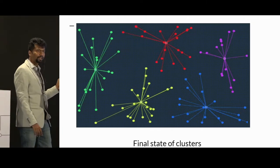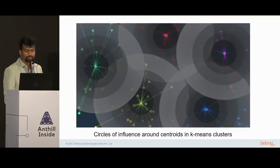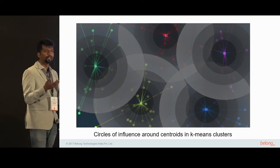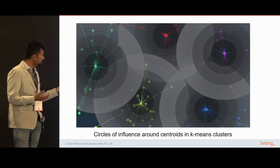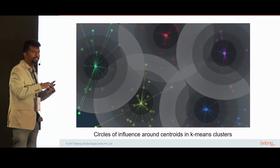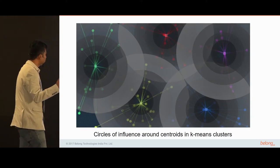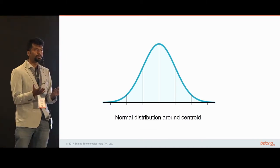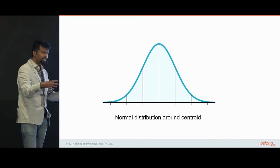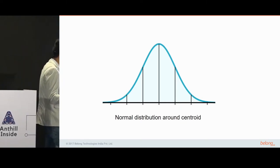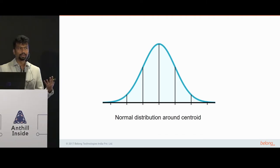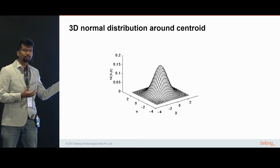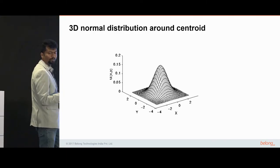Let's assume this is the final state of clusters when you apply K-means. Essentially, what these clusters represent is that each centroid has a circle of influence around it — points nearest to the centroid are more likely to belong to that cluster than points further away. There is a waning circle of influence from the centroids, which is nothing but a normal distribution around the centroid. Each centroid is trying to pull points towards itself, and just like a Gaussian distribution, its circle of influence wanes as the distance increases.